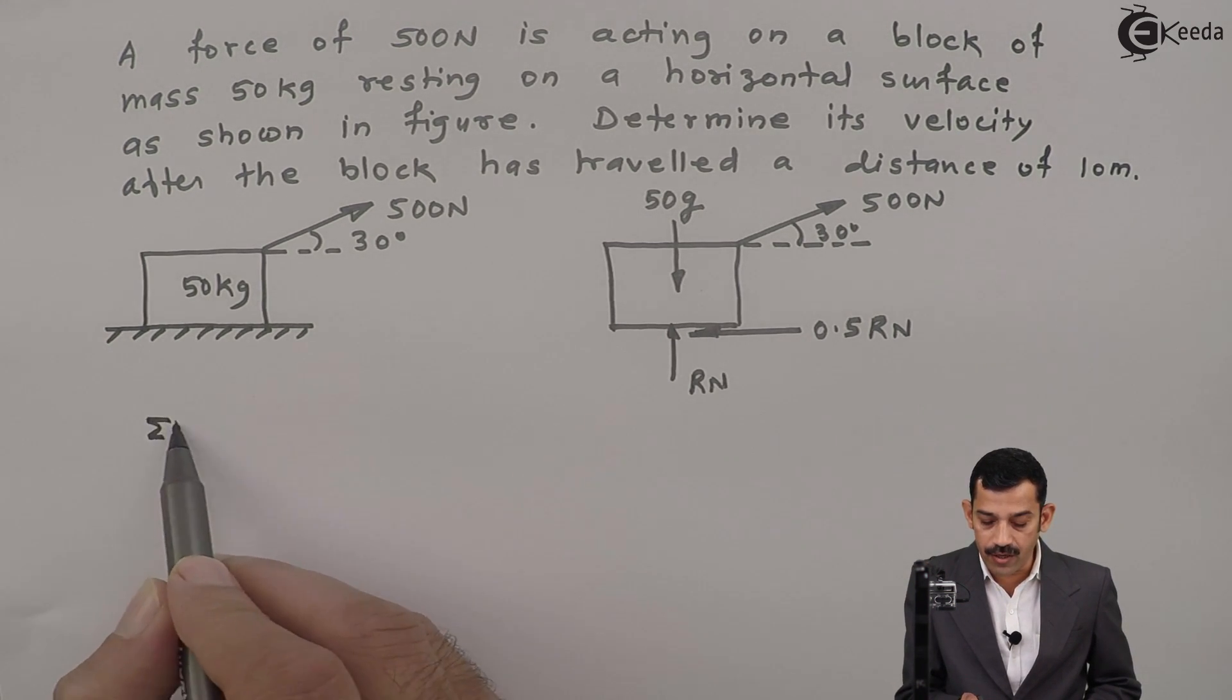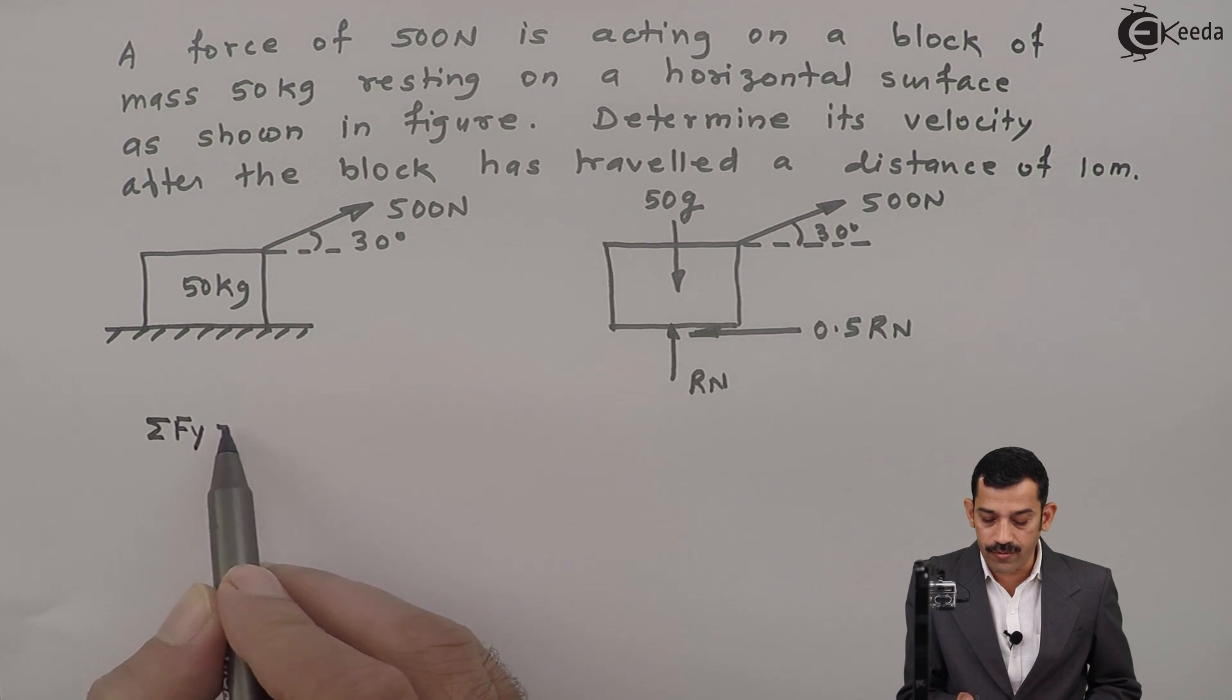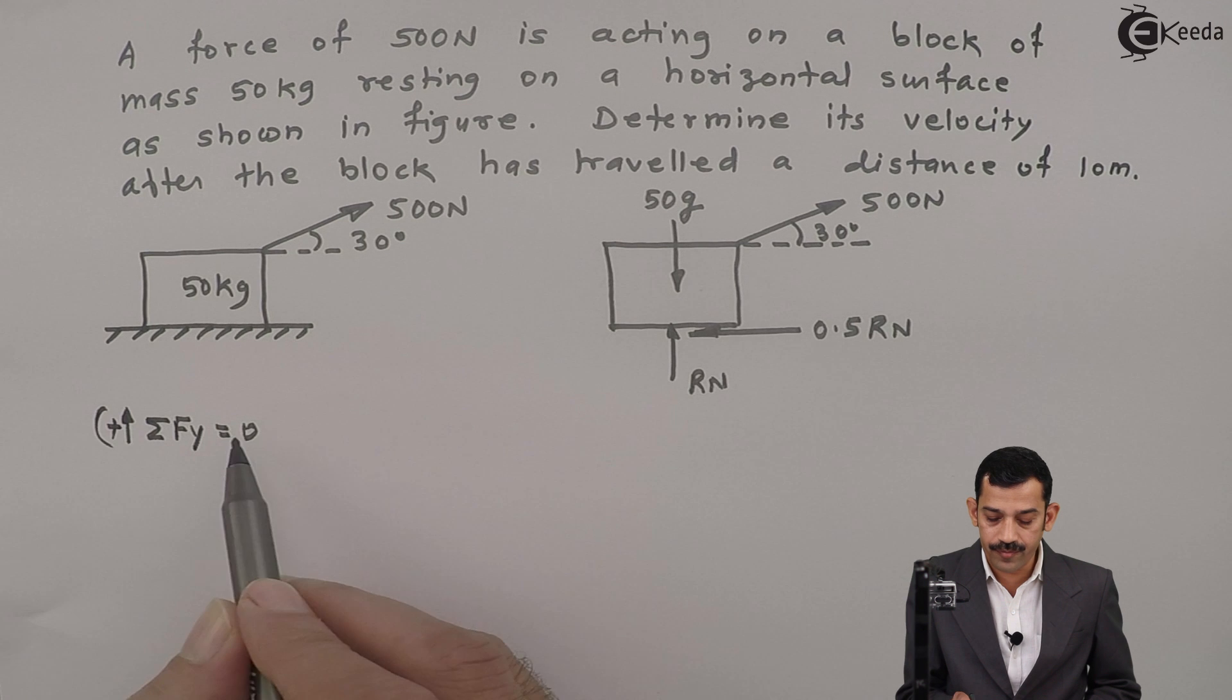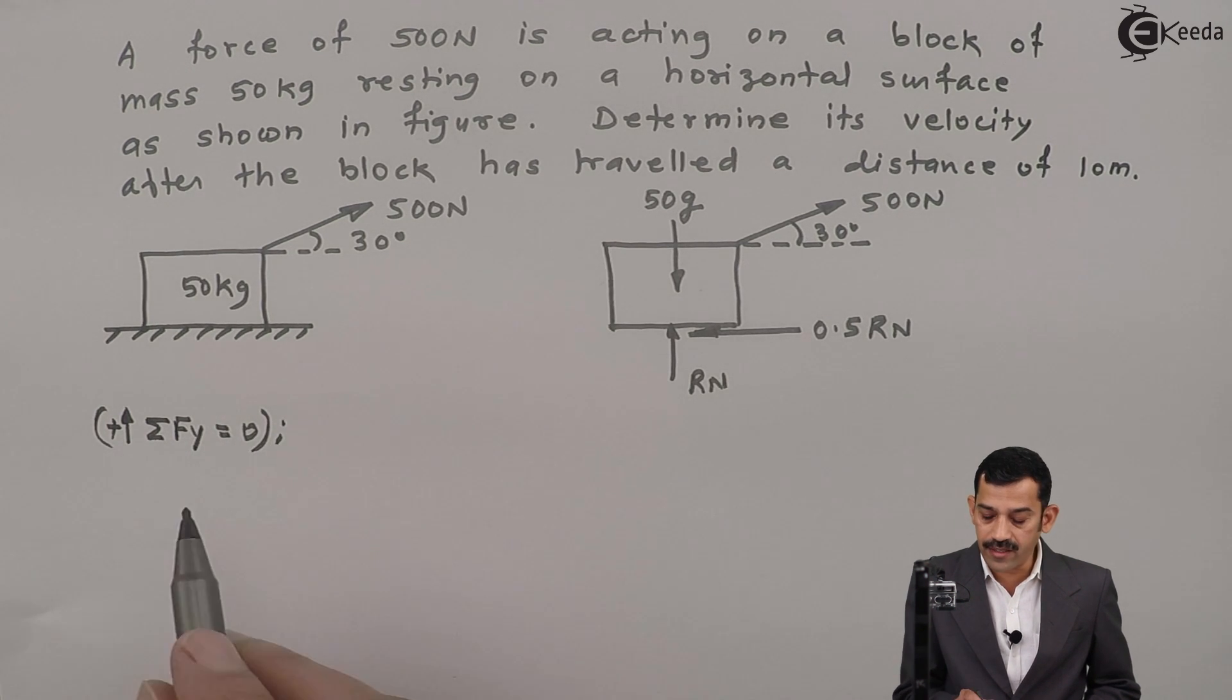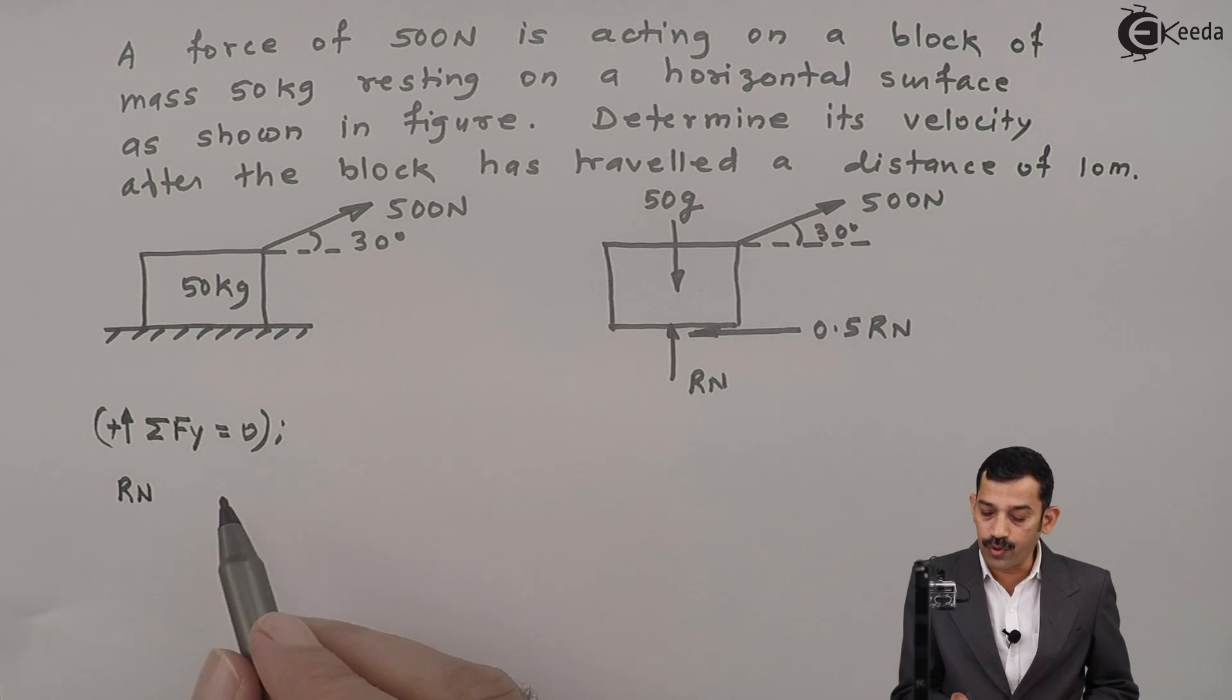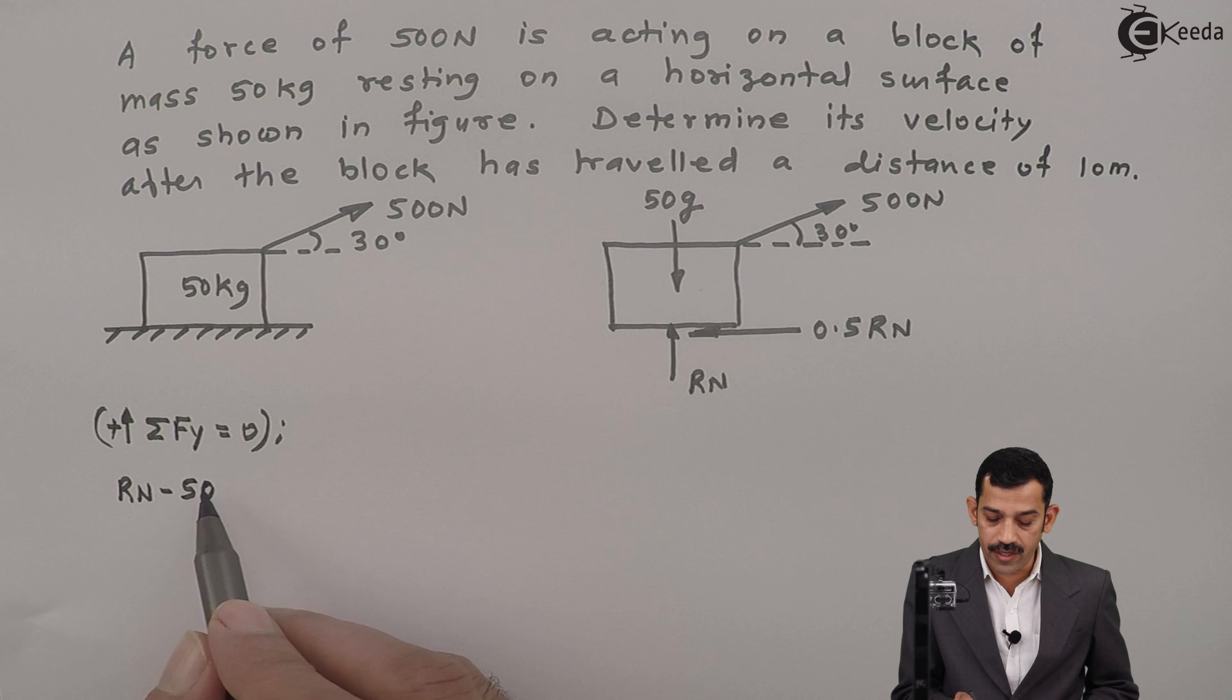To find out normal reaction, I will apply equation along y axis. Summation of Fy equal to 0. Assuming upward force is positive. What force acts in vertical direction? The first one is Rn. Next force is weight that acts in downward direction.